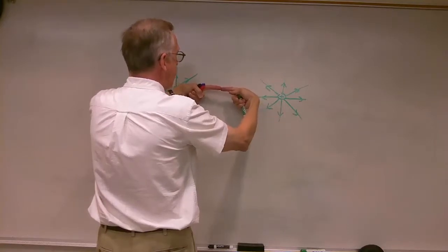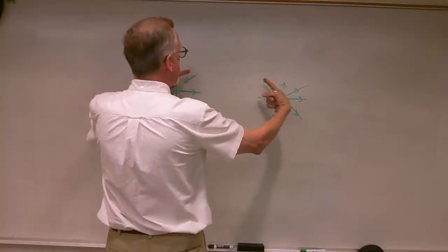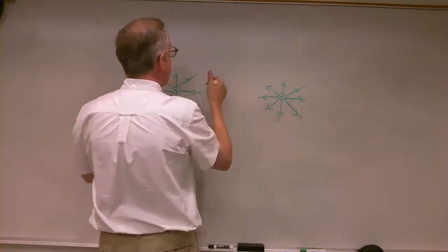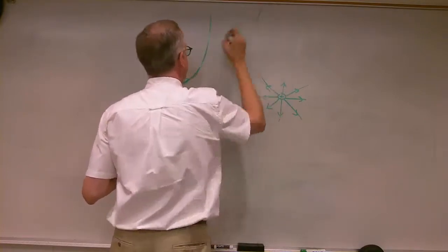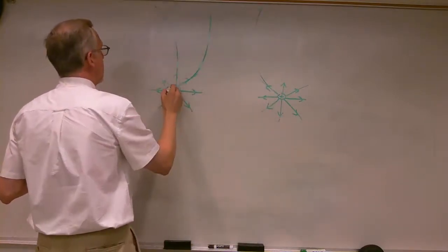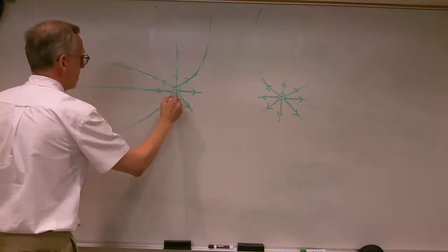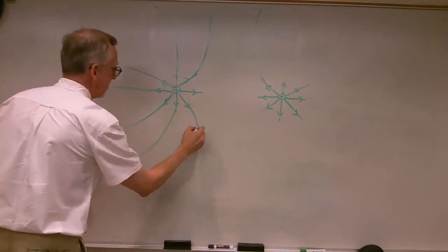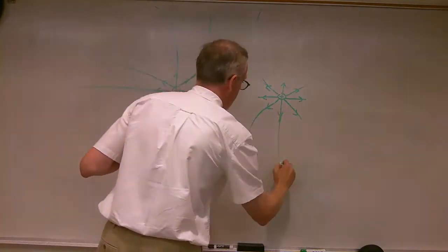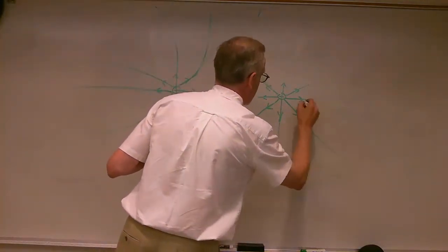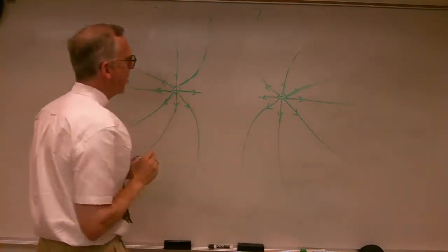We've got to be careful because we've got lines going in opposite directions here, so what's going to happen? They can't cross, so they actually have to bend away from each other — something like that.